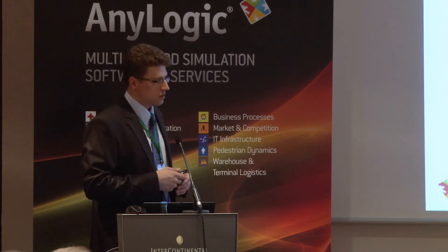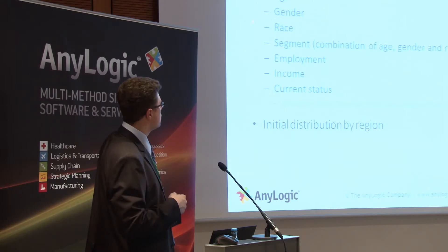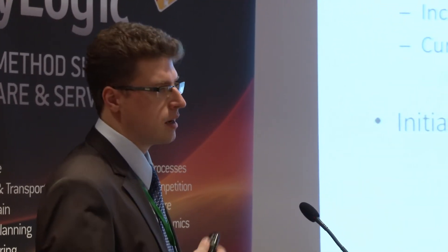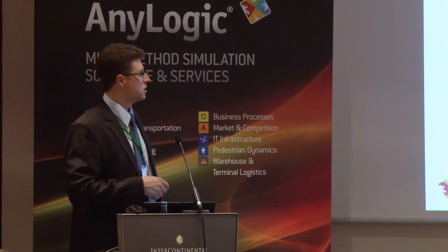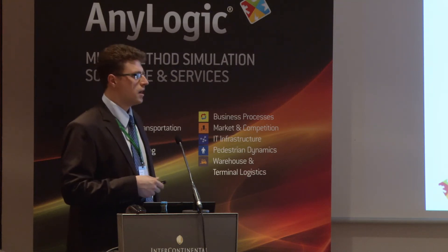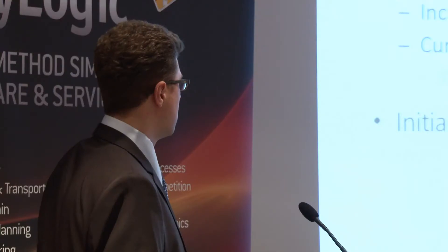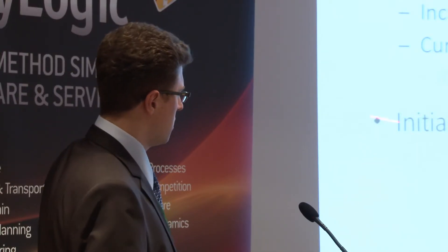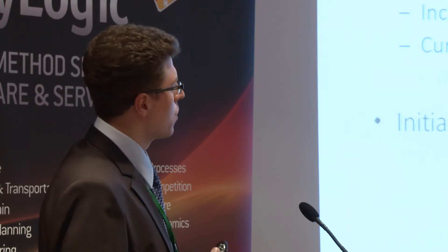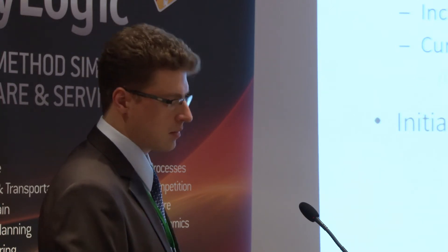When we talk about customers, we see that they have a lot of characteristics like age, gender, and race. We segmented them based on these things — employment, income, and current status in terms of the model. This status, as well as other characteristics, directly influences the probability of purchase of a vehicle. In the initial data we had distribution by region of each type of agent with some characteristics.